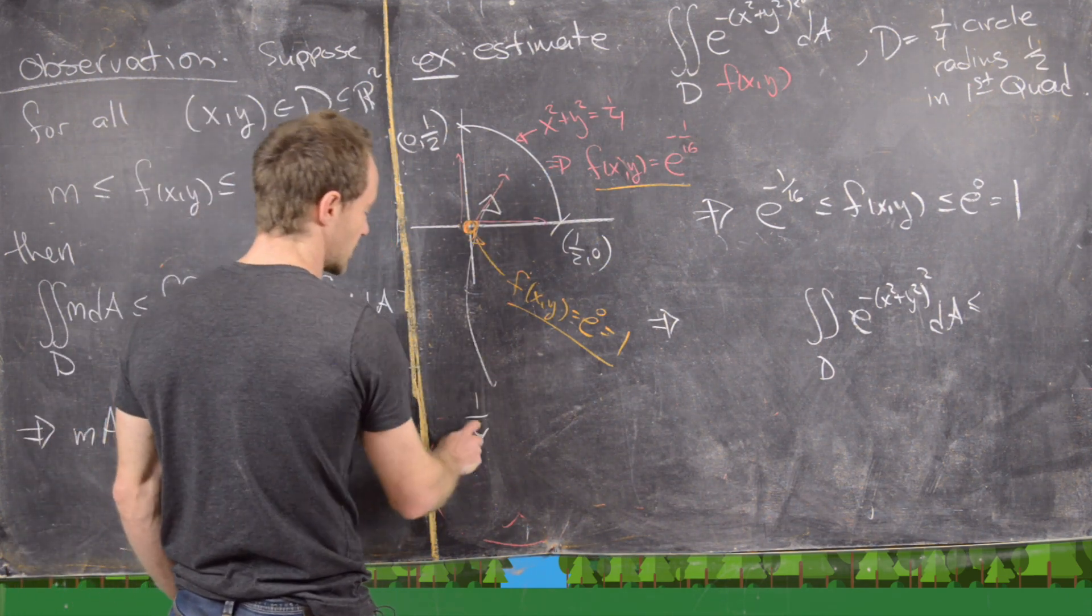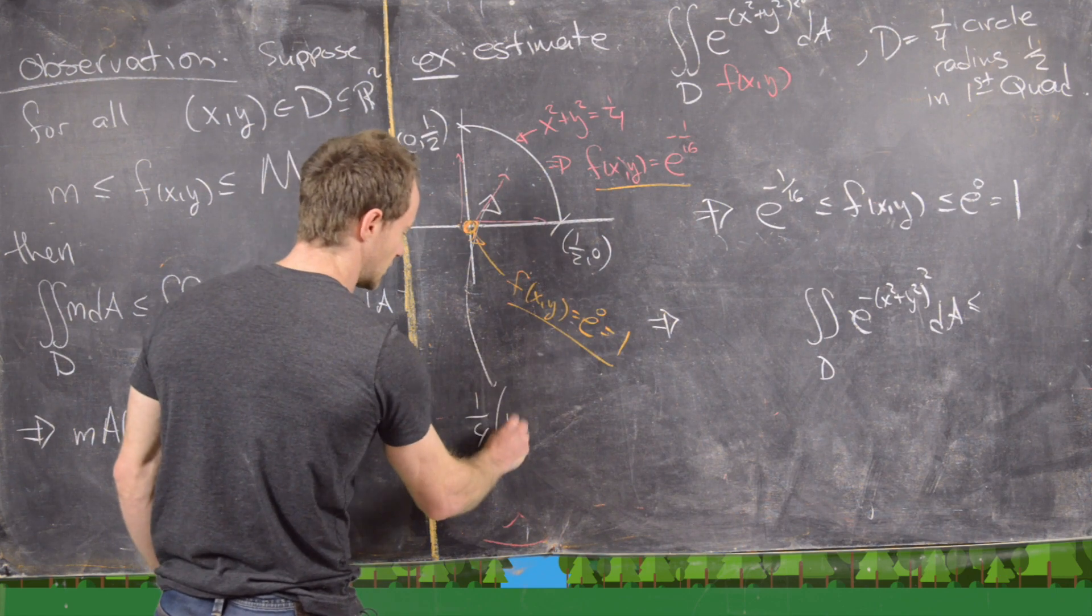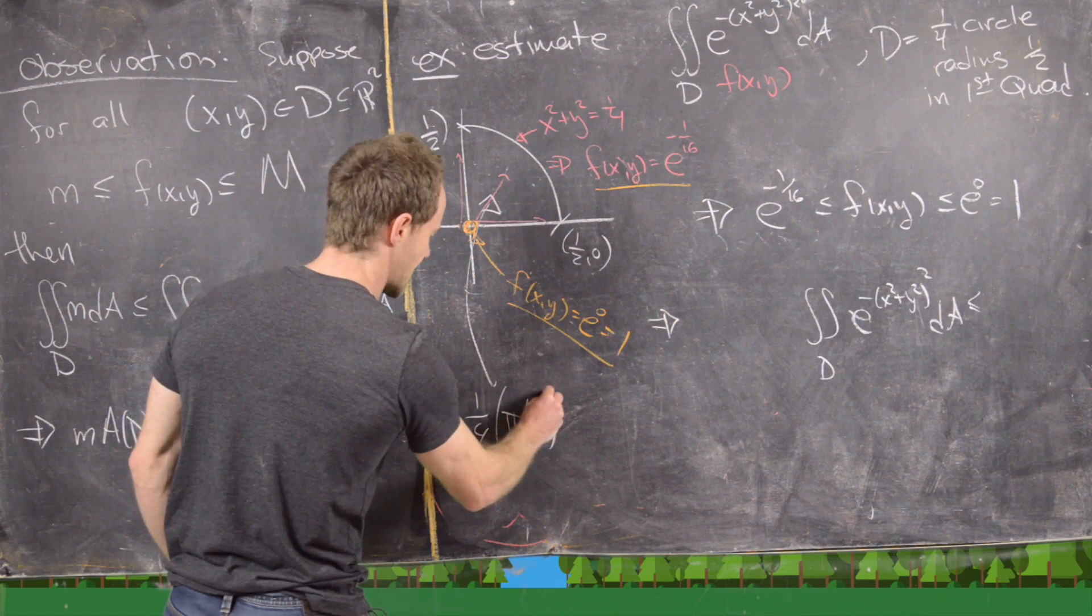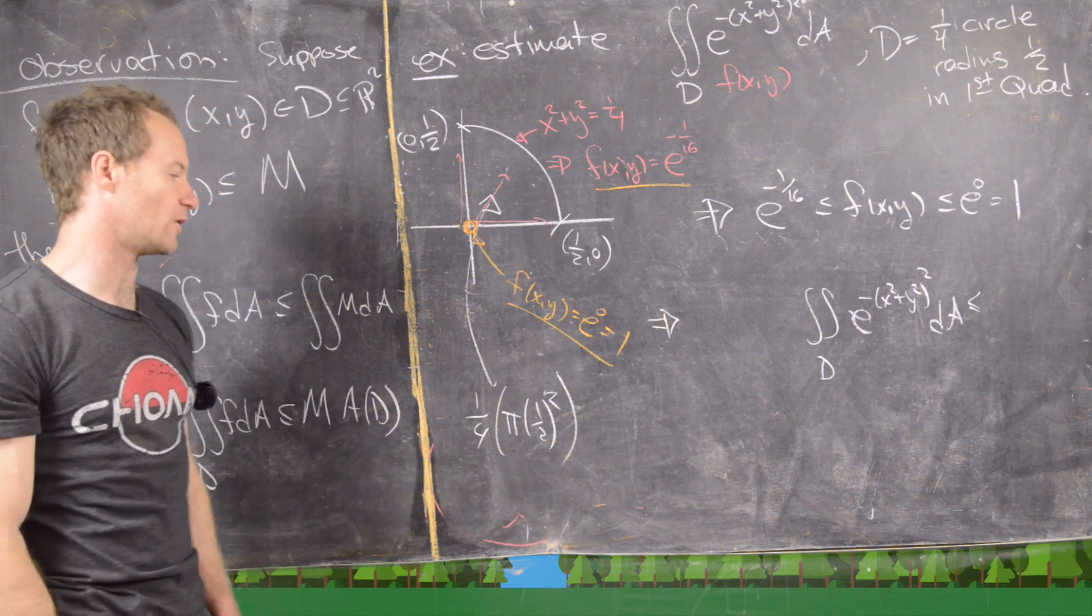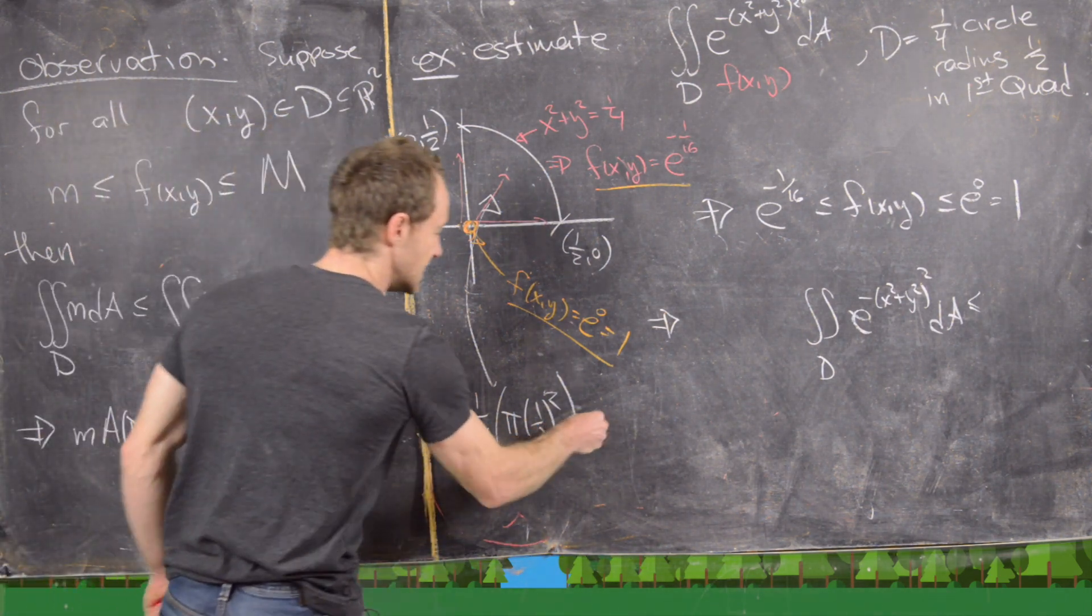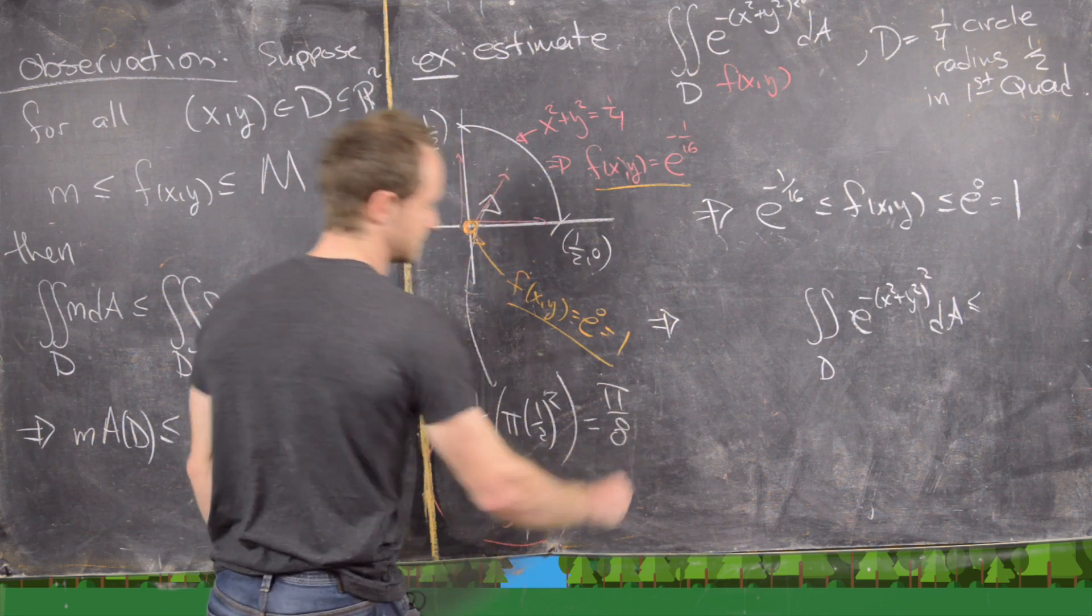Notice it's going to be one quarter times the area of this circle, which is π times (1/2)². So again, that's the area of a circle of radius half. And then we've got only a quarter of a circle. So let's see. That's going to be π/8.